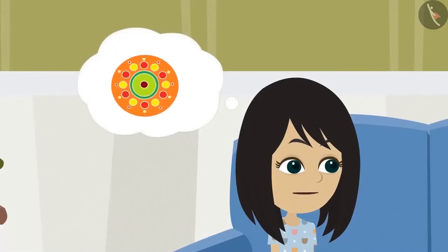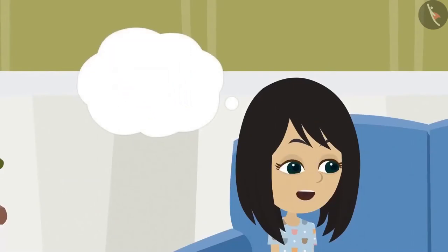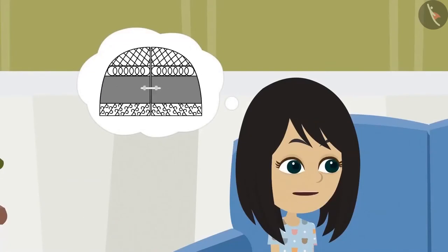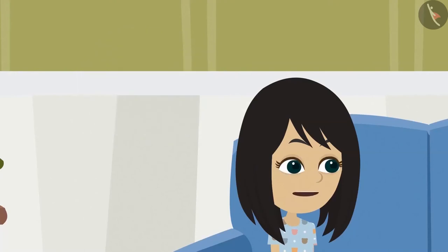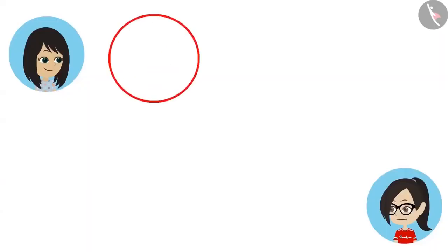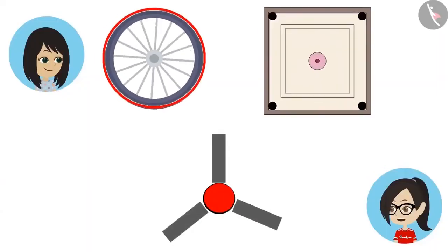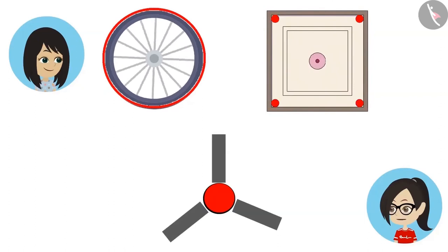Yes, like in rangoli, mummy's saree, and the design on the gate, the circle is there to enhance their beauty. Whereas for the wheels of a bicycle, the center part of a fan, and the holes in the carom board, the circular shape is an essential part.